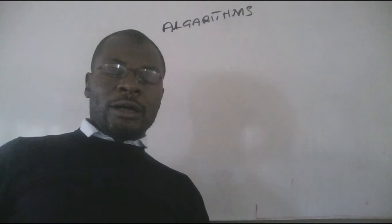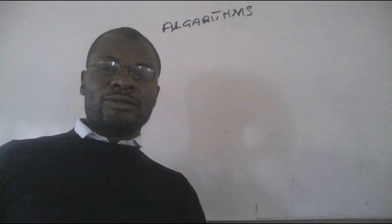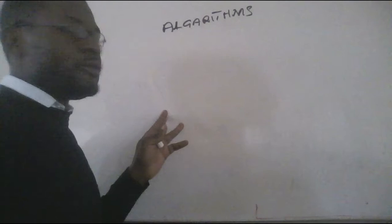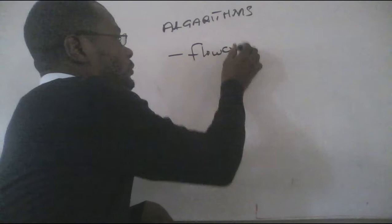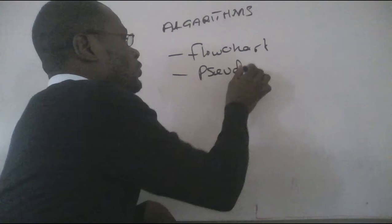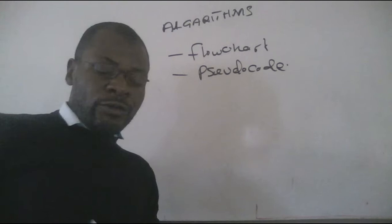There are two types of methods that we look at at senior secondary school. We can use what we call a flowchart, and we can also use what we call the pseudocode. These are the most common types of algorithms available for us.